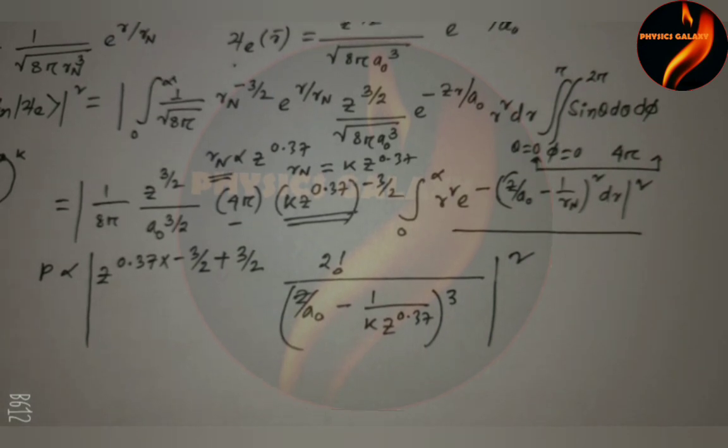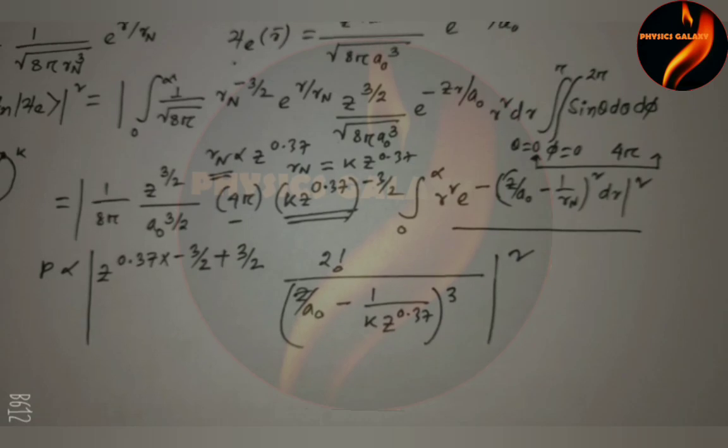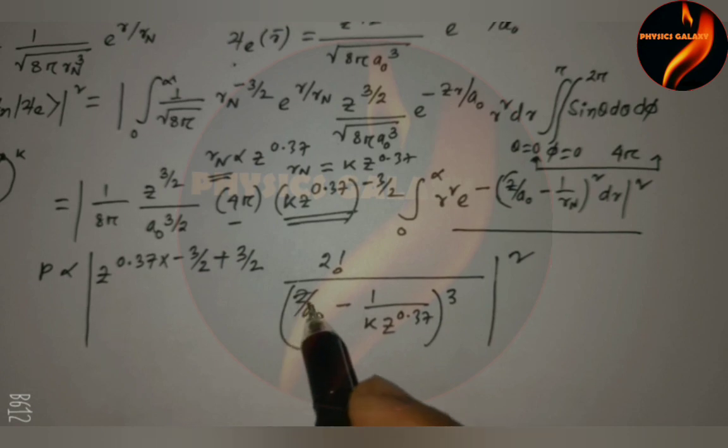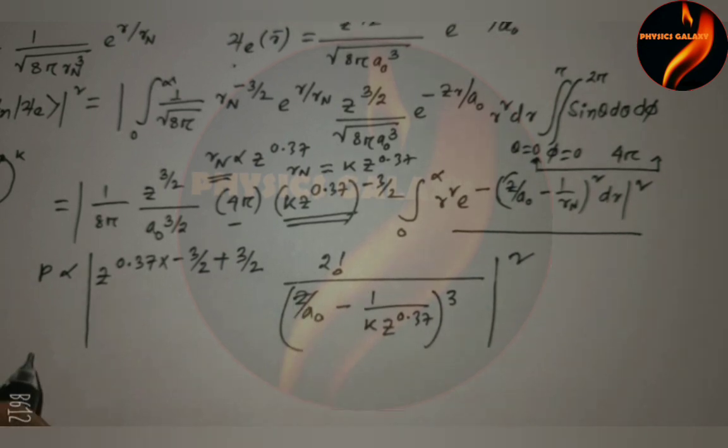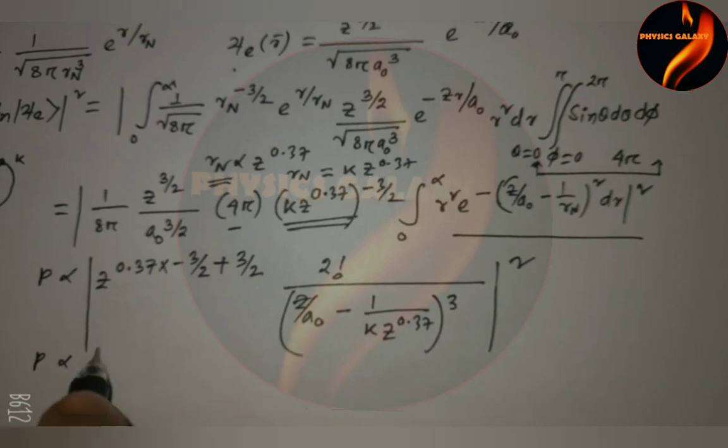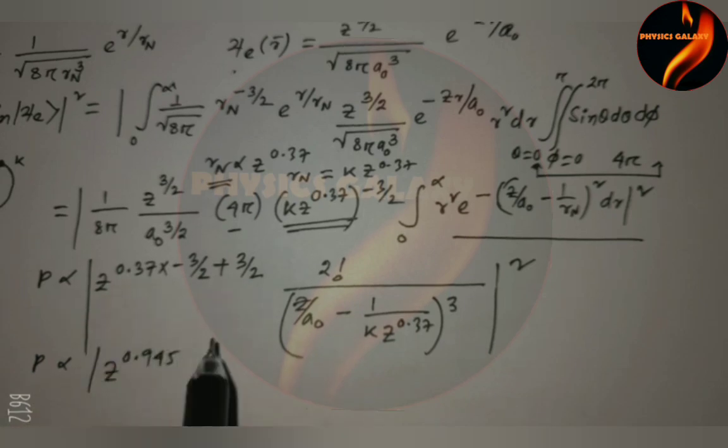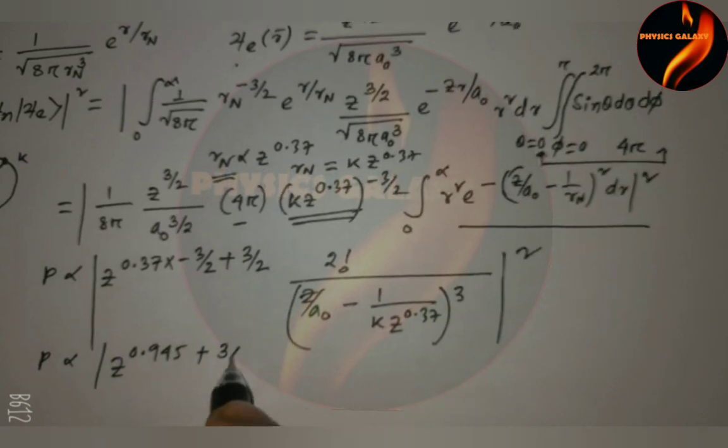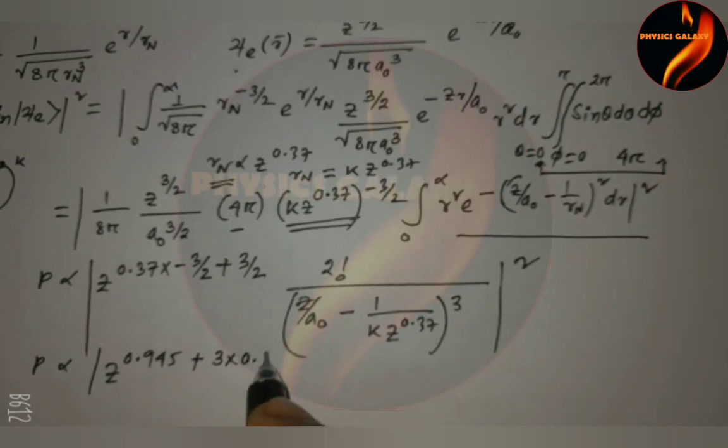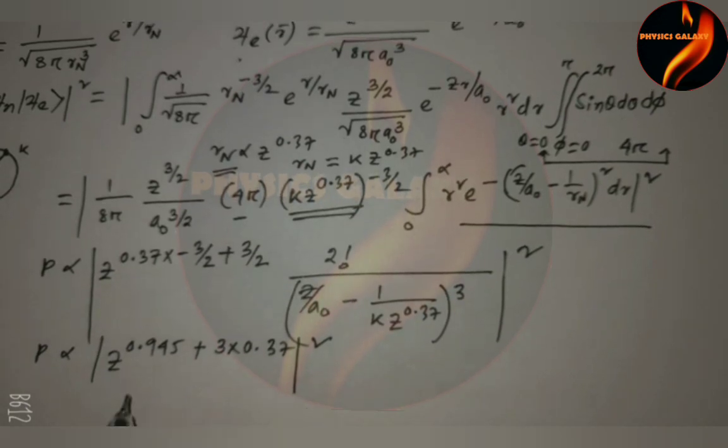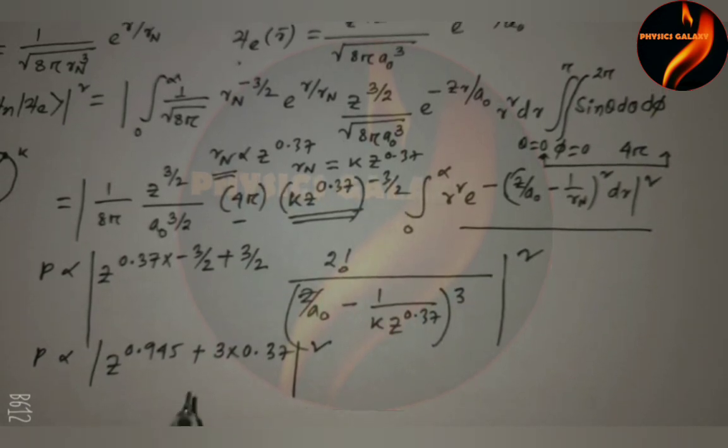But here the problem considers a very good approximation. So we don't take the negative Z value. We can choose Z to the power 0.4945 for this term. And this is plus 3 times 0.37. So that squared. This is taken for good approximation.